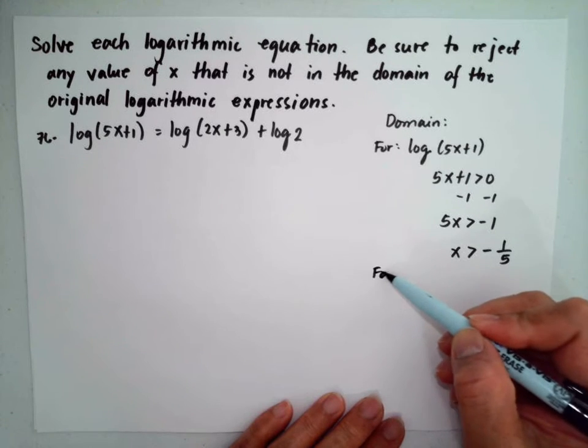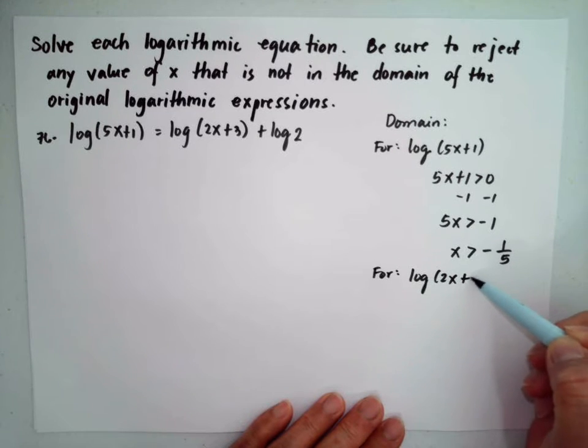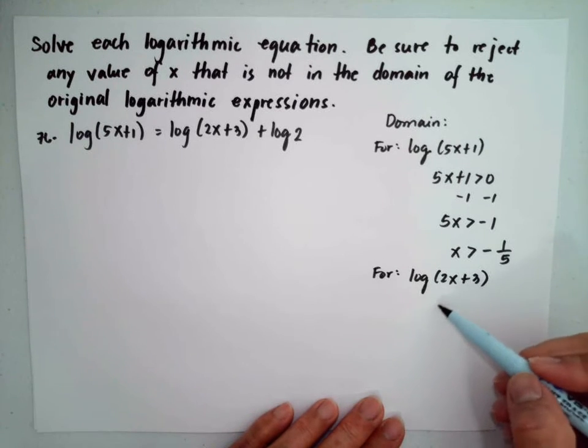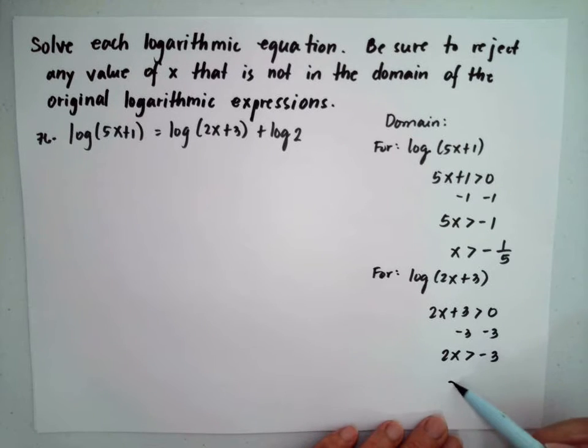Then for log(2x+3), we have 2x+3 should be greater than 0. Subtract 3 from both sides, so 2x should be greater than negative 3. So x should be greater than negative 3 over 2.